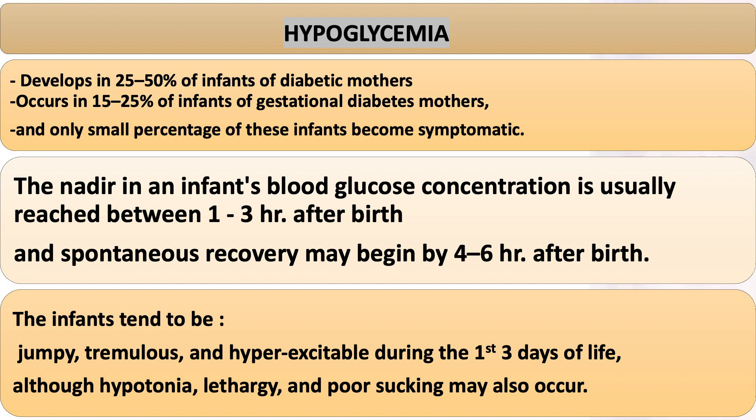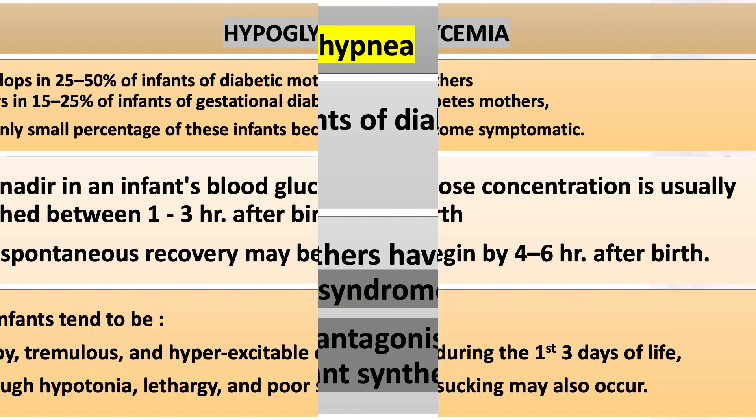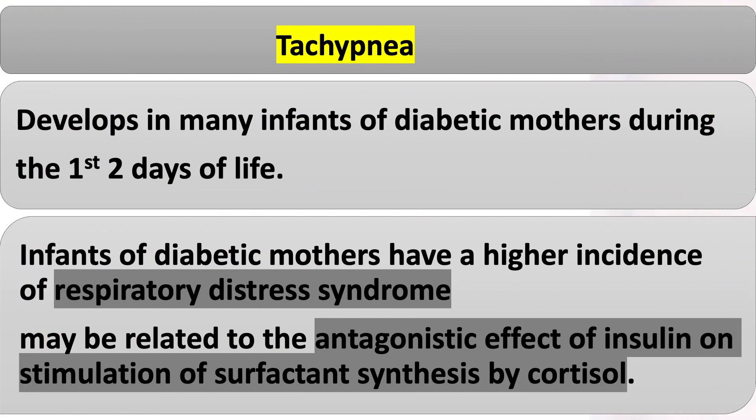Although hypotonia, lethargy, and poor sucking may also occur. Tachypnea develops in many infants of diabetic mothers during the first two days of life. Infants of diabetic mothers have a higher incidence of respiratory distress syndrome, which may be related to the antagonistic effect of insulin on stimulation of surfactant synthesis by cortisol.